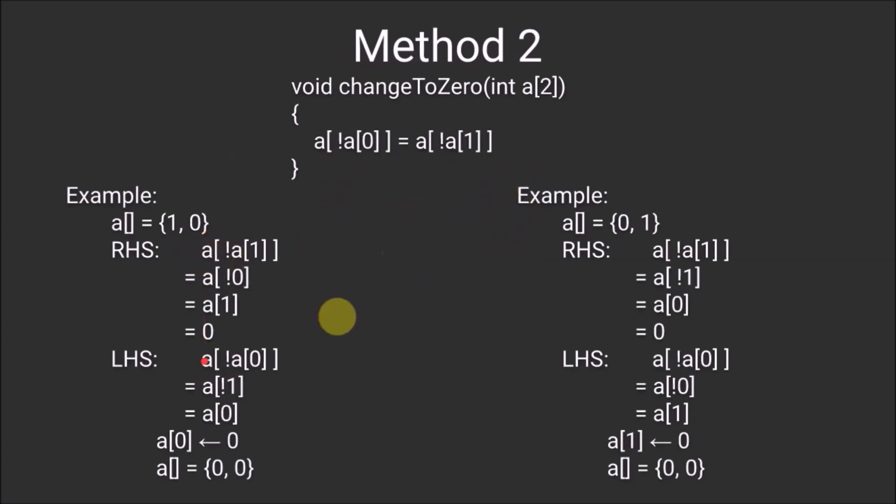The procedure for the RHS will be same. At the LHS in this array 1, 0, the value of A[0] will be 1 and the complement of 1 will be 0. So, we assign 0 at the 0th index of the array which will make the array 0, 0.